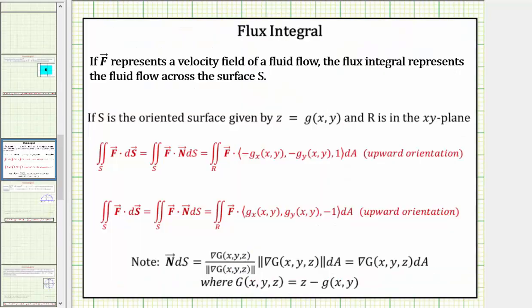If the vector field f represents a velocity field of a fluid flow, then the flux integral represents the fluid flow across the surface s. So if s is the oriented surface given by z equals g of x comma y, and r is the region in the xy plane, for an upward orientation, here's the formula we use for the flux integral.